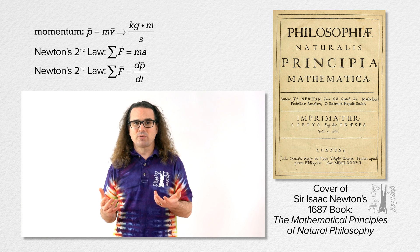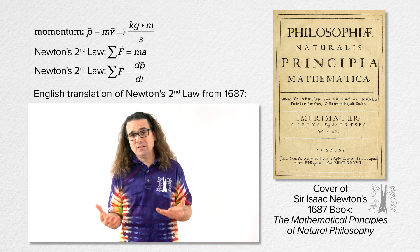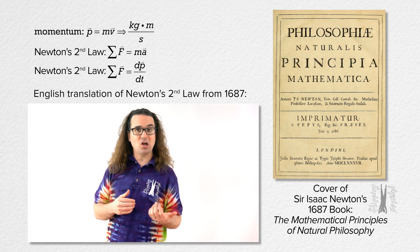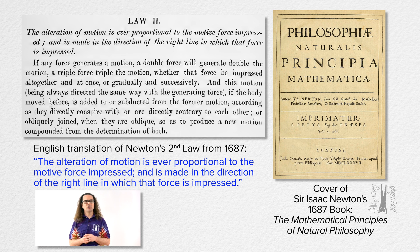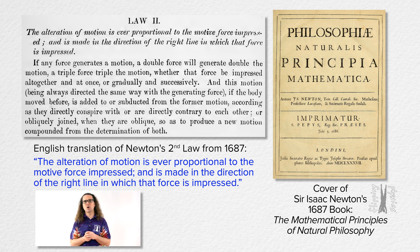Also, it was originally published in Latin. So, the English translation of Newton's second law from 1687 reads, The alteration of motion is ever proportional to the motive force impressed, and is made in the direction of the right line in which that force is impressed.